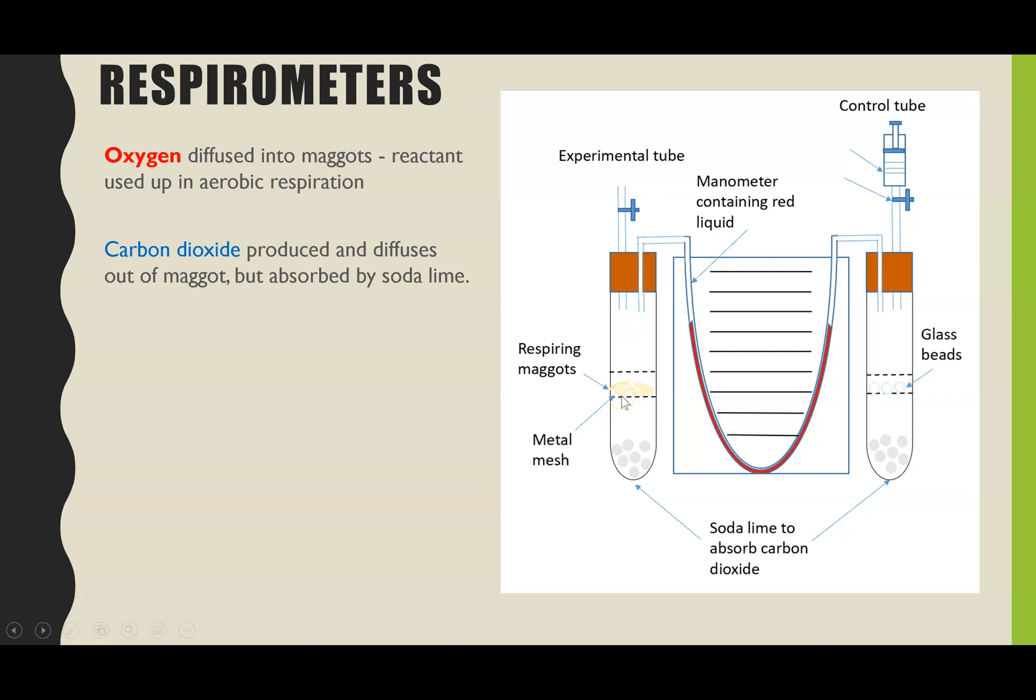The maggots will also be producing an equal amount of carbon dioxide as they respire but that carbon dioxide is going to be absorbed straight into the sodalime. So the effect that we'll see is the volume of gas inside of the experimental tube will decrease because the oxygen is moving into the maggots. The carbon dioxide that is produced is absorbed straight away out of the local atmosphere in that tube into the sodalime.